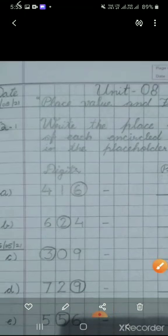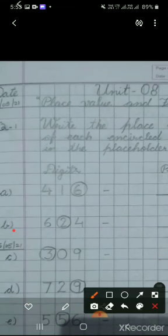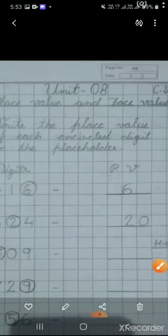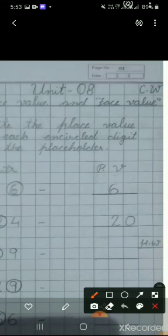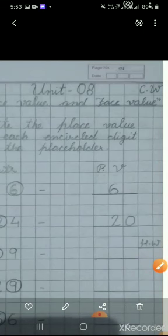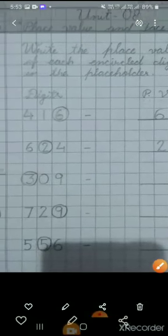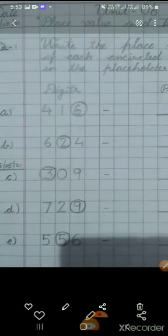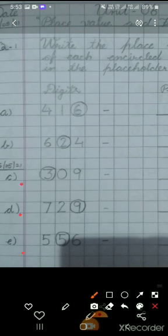Now, on number B, it is written 624, 2 is encircled, which is at 10th place. So, you will have to write here, 20. Now, C, D, and E, you will have to solve yourself. You will tell its place value, which number is encircled, okay?